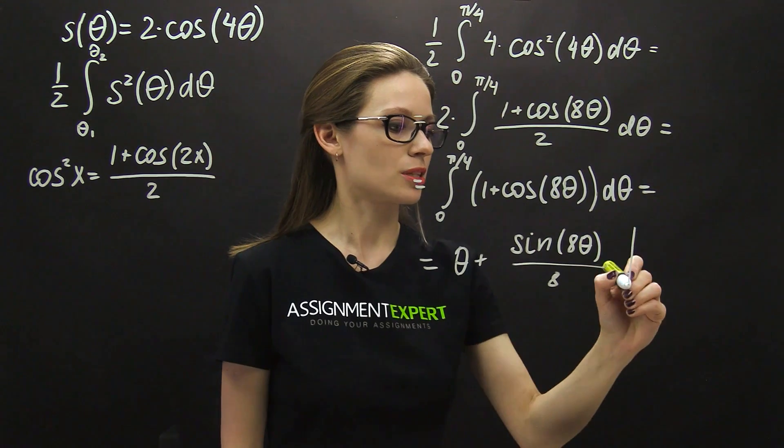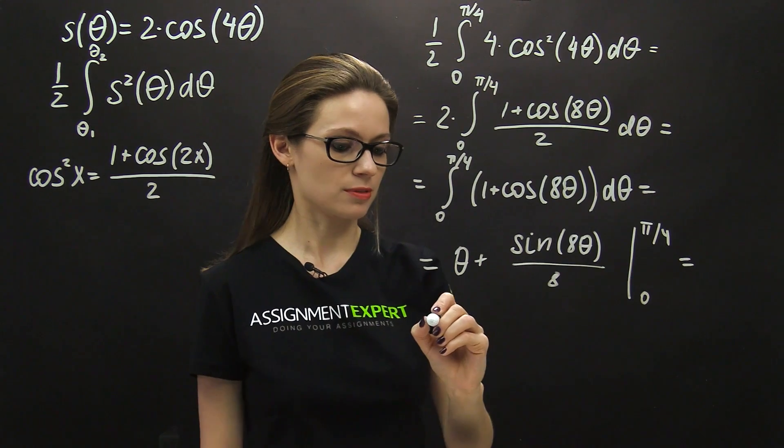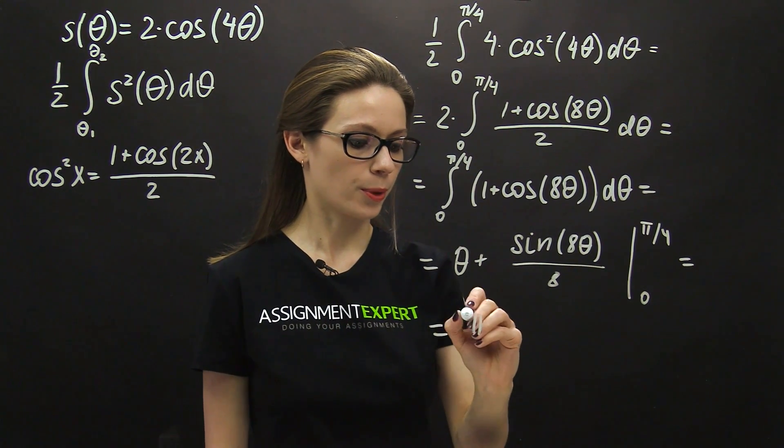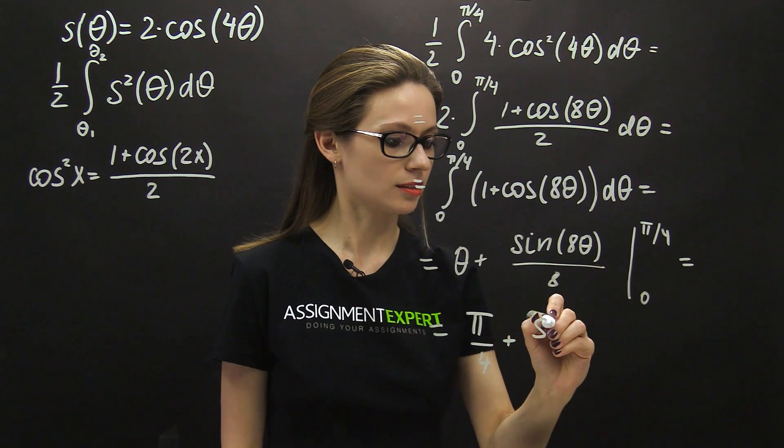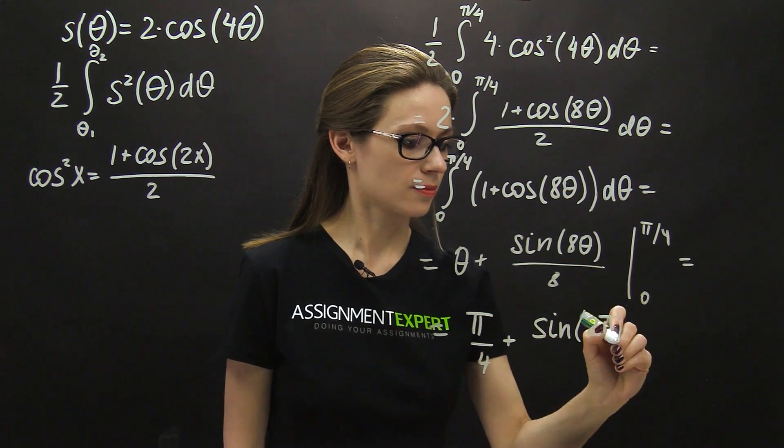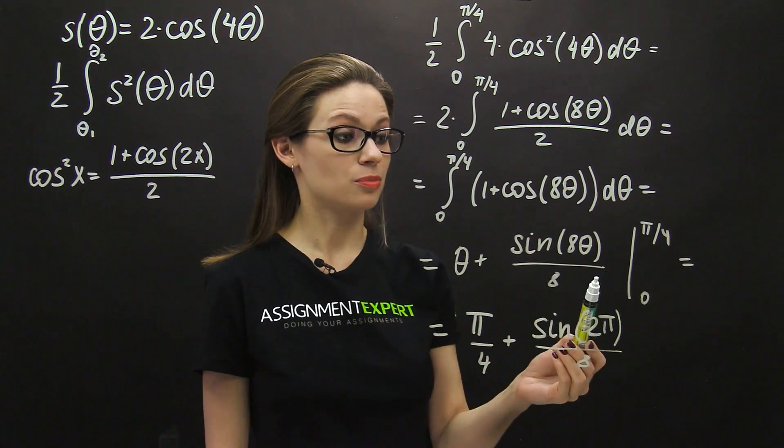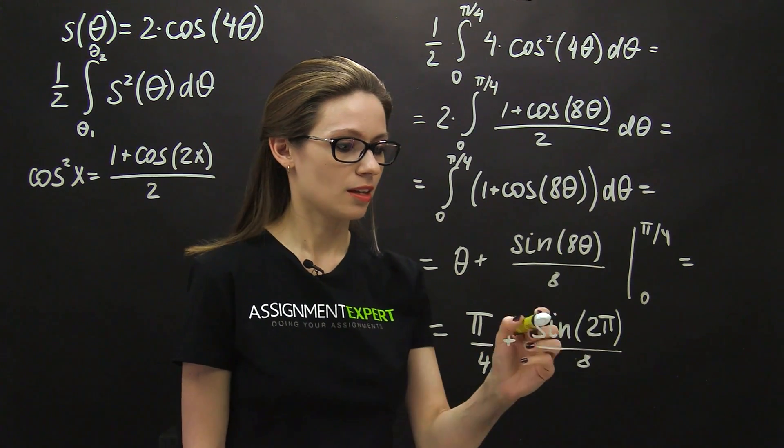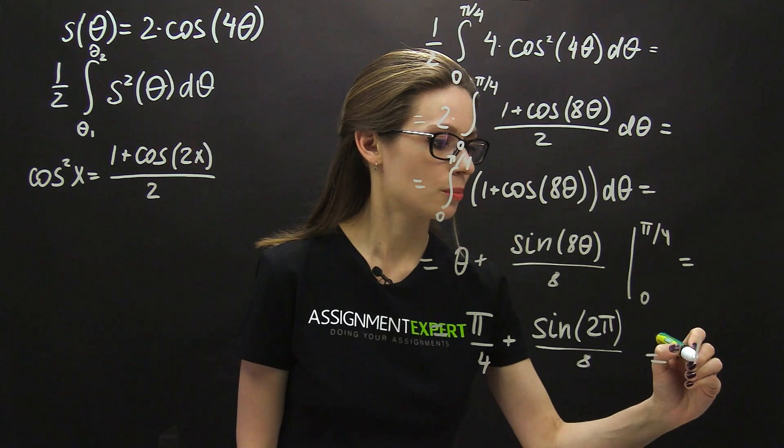Within the limits from 0 to pi over 4, which gives us pi over 4 plus sine of 2 pi over 8, then minus 0 and minus 0. This term over here equals 0 as well, which gives us pi over 4.